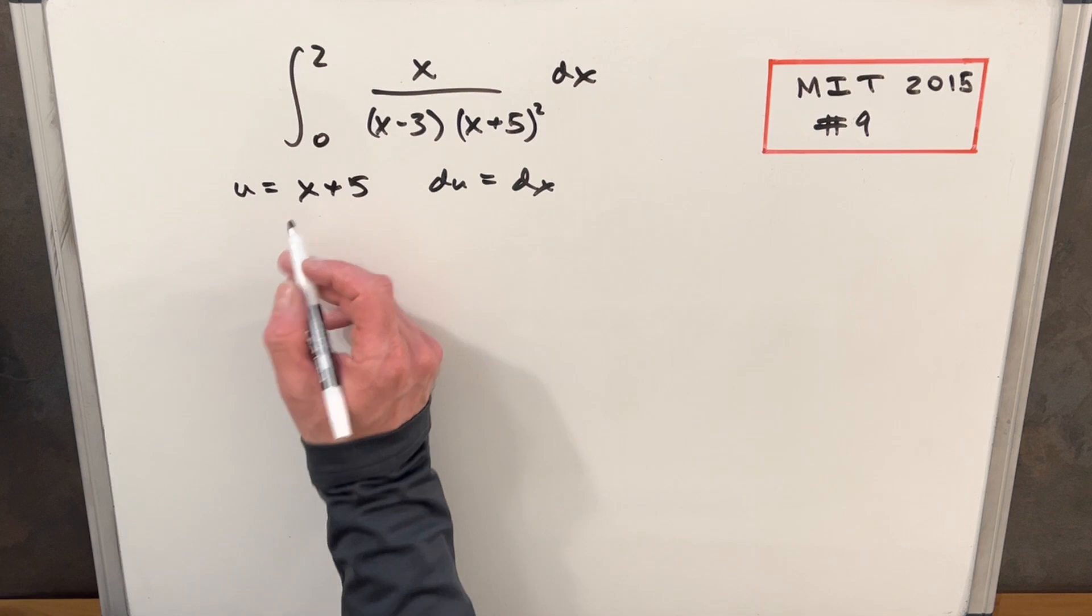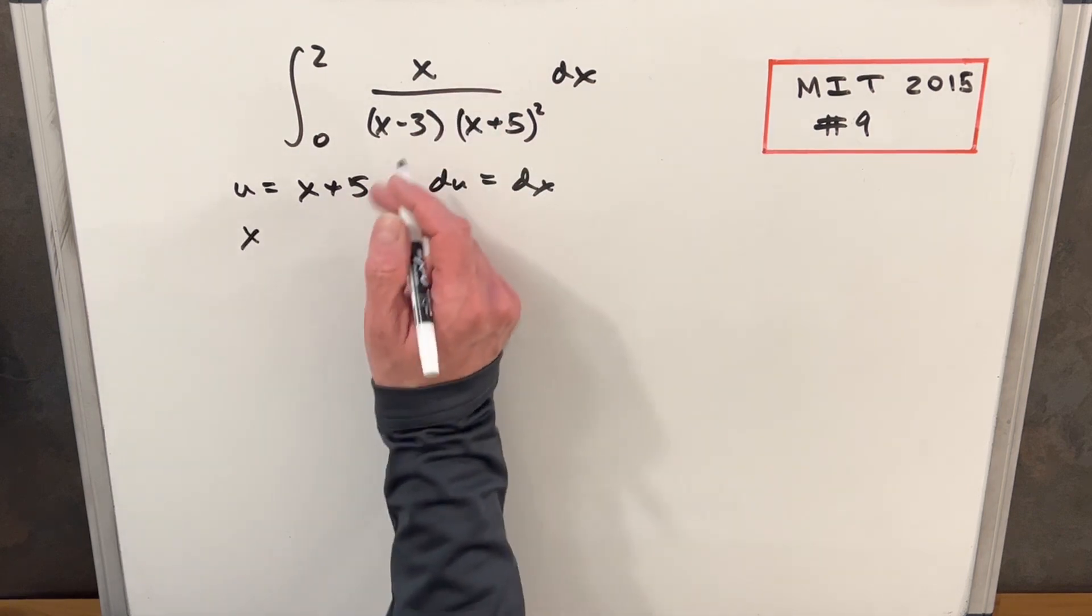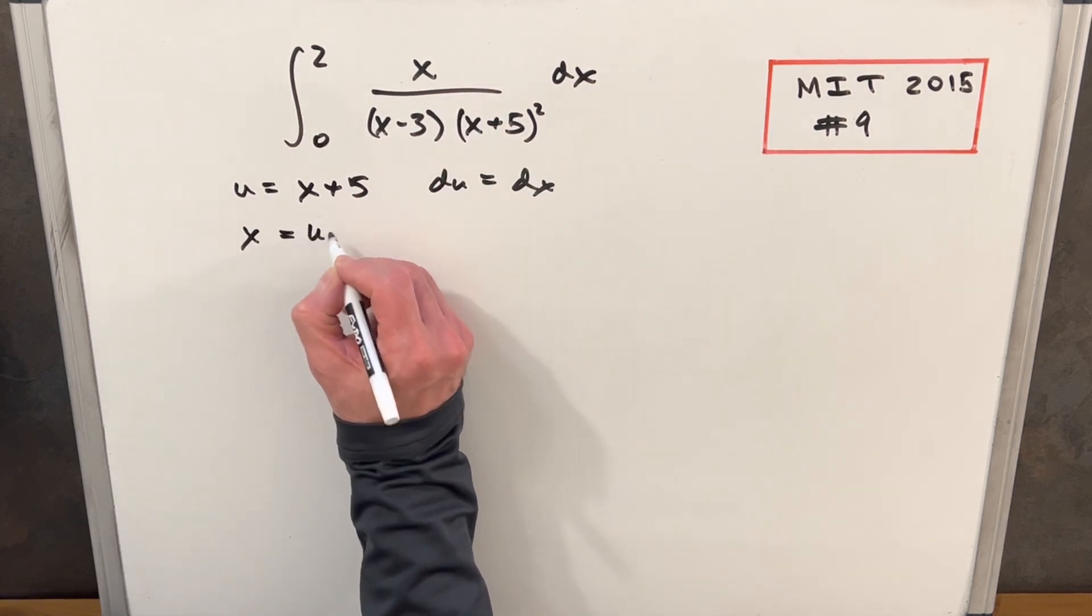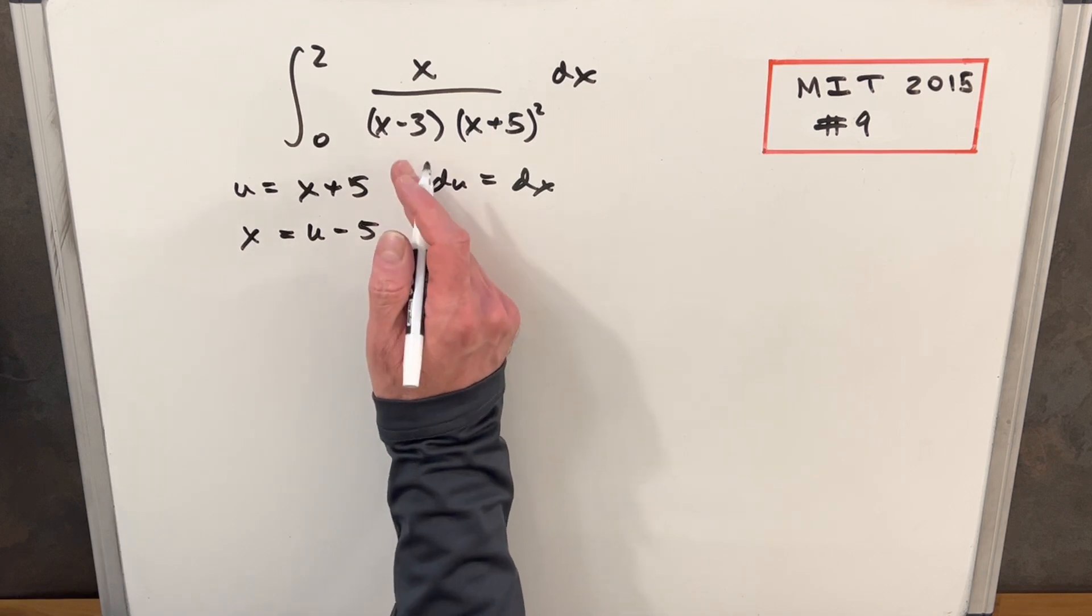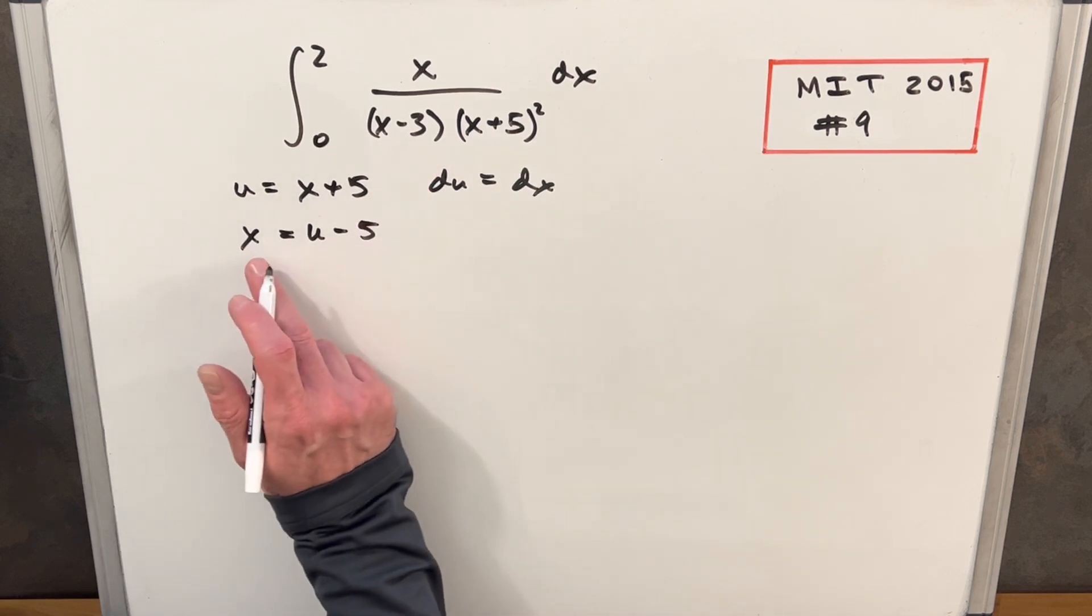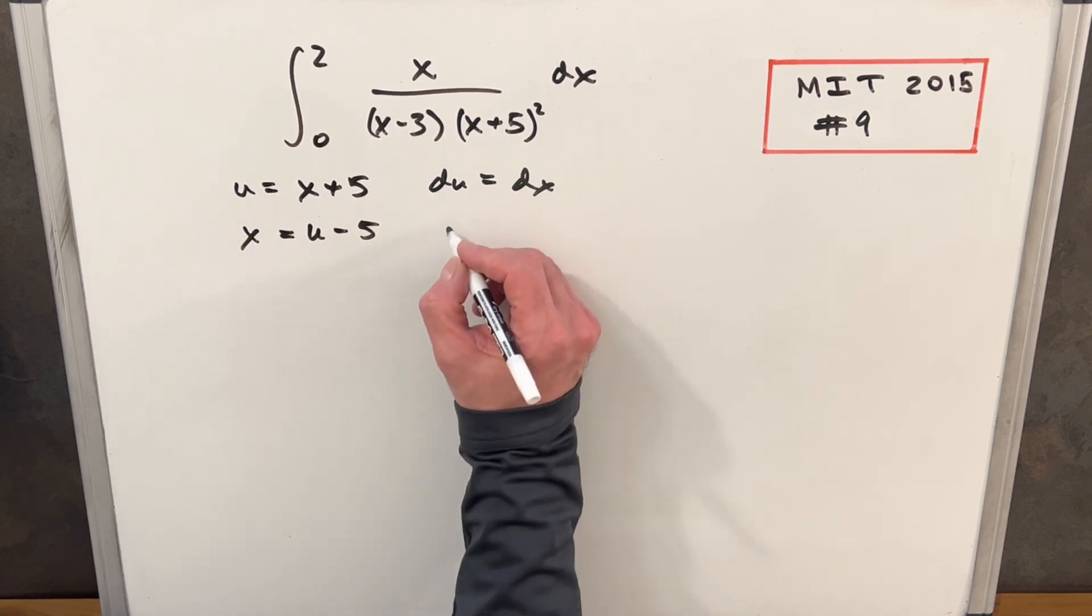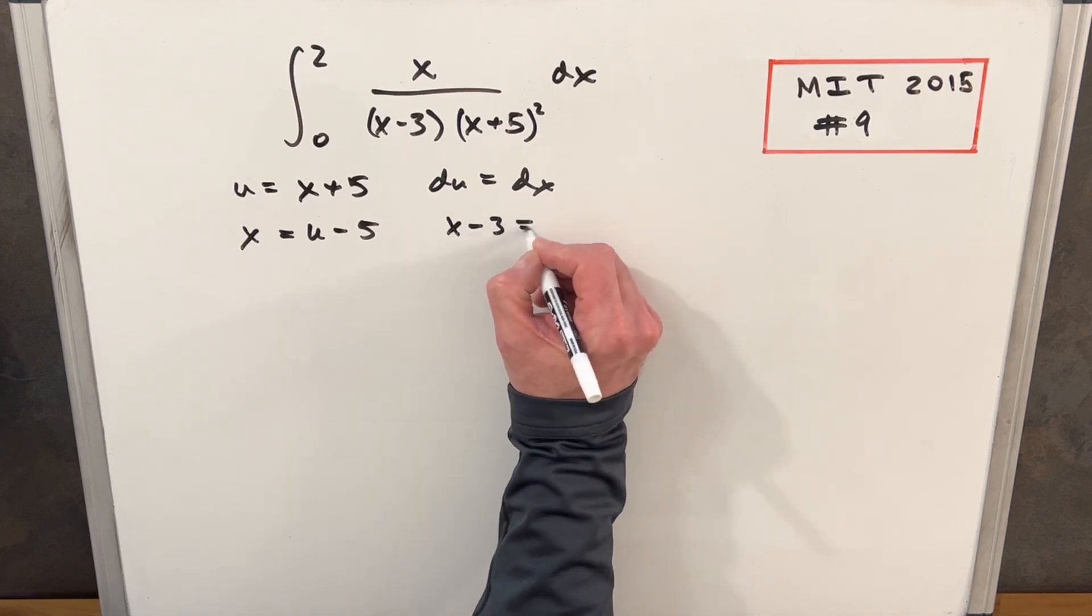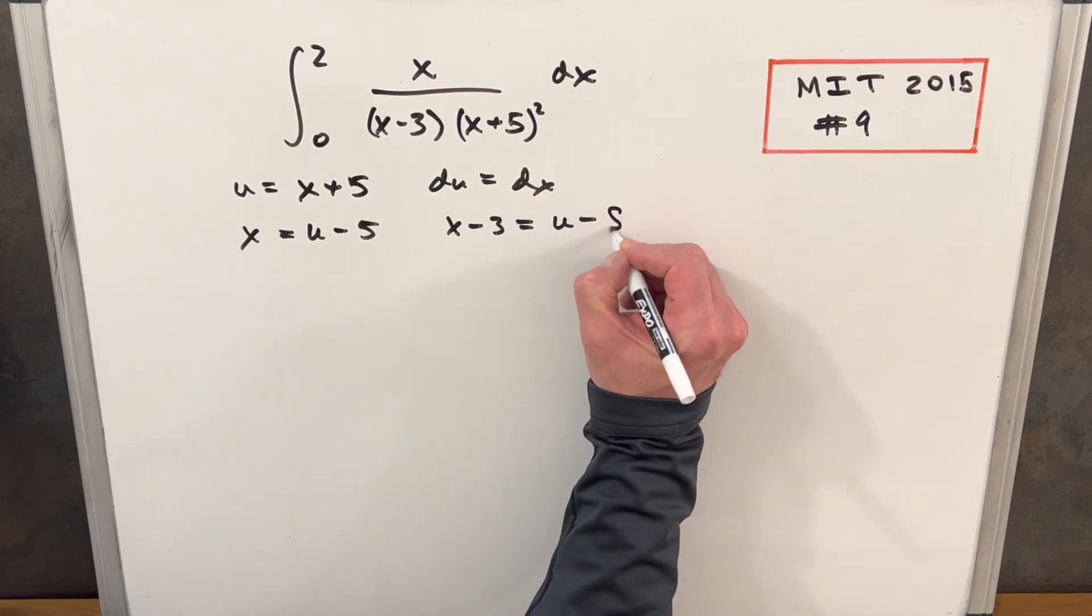Then I want to find, let's see, so for x, I just want to get an expression for everything. So x is going to be u minus five, and that would make x minus three, we could subtract three on both sides of this, and we'd have, for x minus three, this is going to be u minus eight.